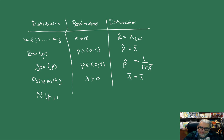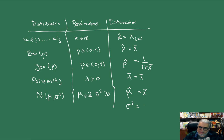Y la normal, con parámetros mu y sigma cuadrada. Tenemos el parámetro mu, que es un número real, y la sigma cuadrada, que es algo positivo. La mu la estimamos con x barra, y la sigma cuadrada la vamos a estimar con n menos 1 sobre n por s cuadrada. Esas son las cuentas que hicimos las sesiones anteriores.